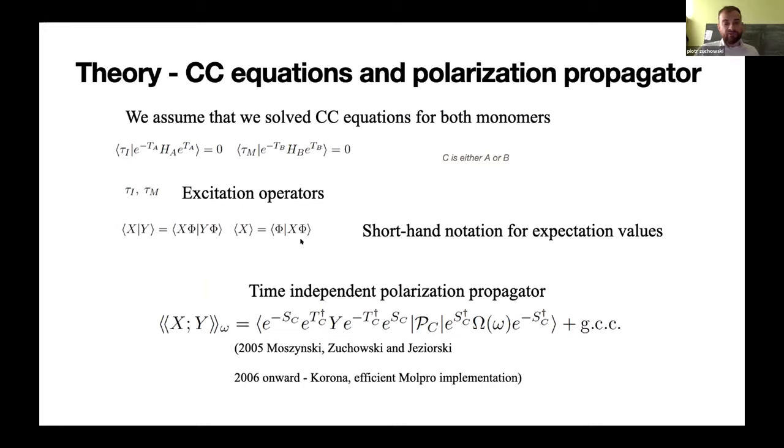So, in 2005, Robert Moszynski, myself, and Bogumił Jeziorski, we wrote a paper in which we introduced something which we called time-independent polarization propagator, which has some advantages over the well-known linear response function. So, this propagator has good Hermitian symmetry and is explicitly connected, as you can see, because it can be written only as a commutator expansion. So, Tatjana Korona did a formidable thing, and she developed that theory and efficiently implemented that in Molpro.